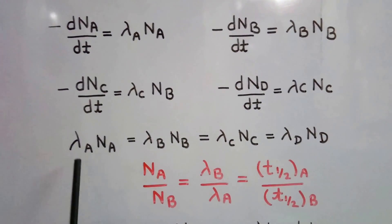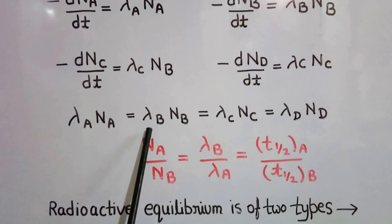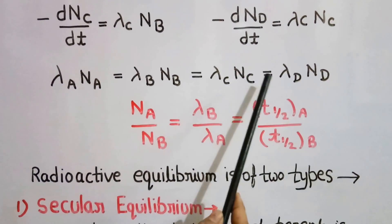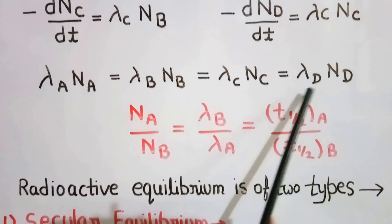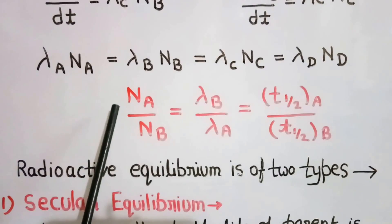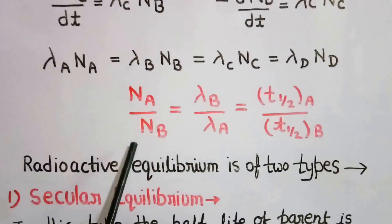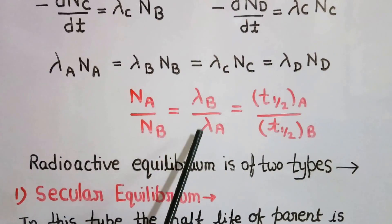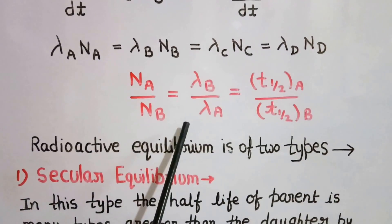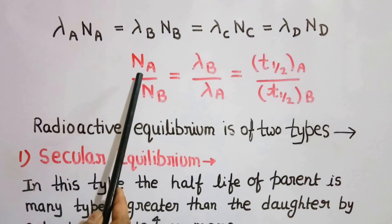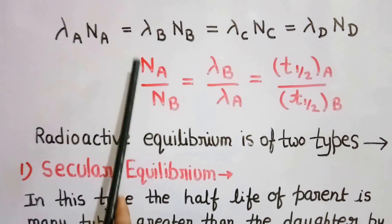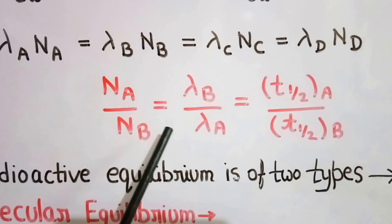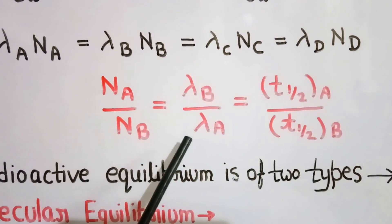From these equations we can write: λA · NA = λB · NB = λC · NC = λD · ND. So the ratio NA/NB equals λB/λA. From this, we can see that the number of atoms of any radioactive element is inversely proportional to its disintegration constant.